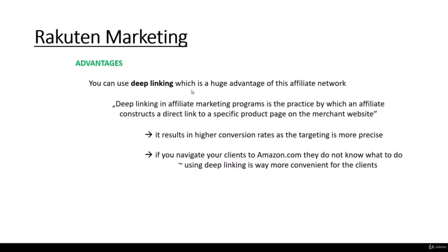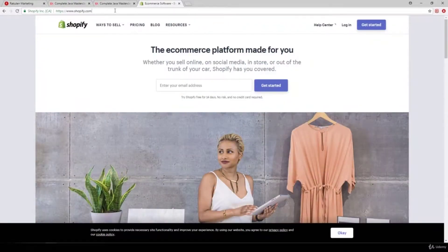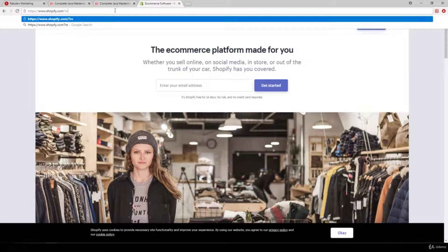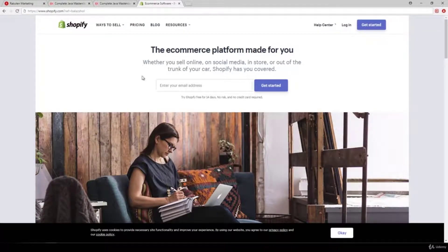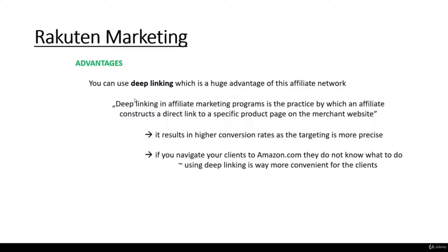We can also use simple affiliate links — for example, when promoting Shopify, the link might be something like 'shopify.com?ref=BalazHolzer', which points to the homepage itself. That is not deep linking. Deep linking is when there's a direct link to a specific product page on the merchant website. Deep linking is a huge advantage of Rakuten Marketing because it results in higher conversion rates as the targeting is more precise. If you navigate clients to Amazon.com, they don't know what to do — direct links convert much better.